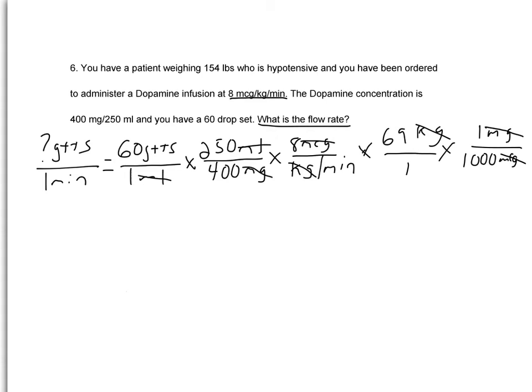Now we can also cross out some zeros. So we can take 60. I just move left to right with the zeros. 250 over 400, we can cancel that zero out. So now let's rewrite everything we have left after everything that's been canceled out. So we have 6 drops over 1 times 25 over 4 times 8 over 1 minute times 69 over 1 times 1 over 1 thousand.